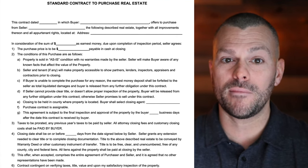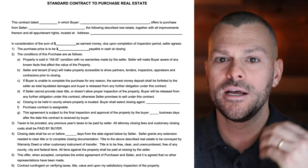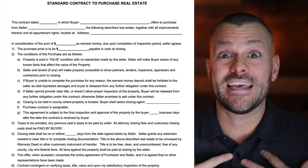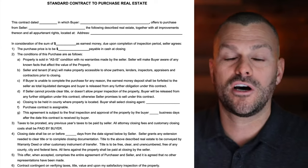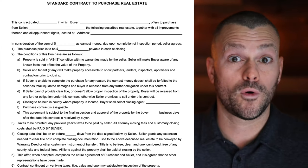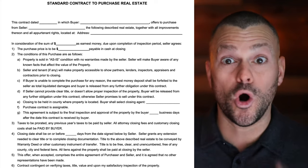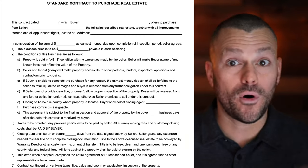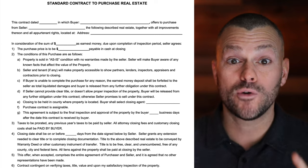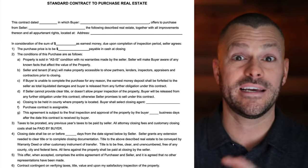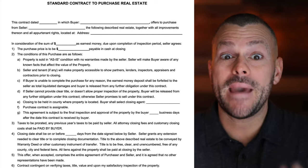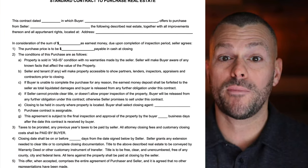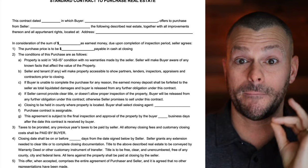Next: 'in consideration of the sum of as earnest money due upon completion of the inspection period, seller agrees.' So right here is going to be your earnest money amount. I often use $10, occasionally $100. It is very rare that I'm putting up more than $100 unless I know it's a home run deal or I personally intend to close on the deal. If I'm wholesaling, $100 is typically the most I'm willing to put up.